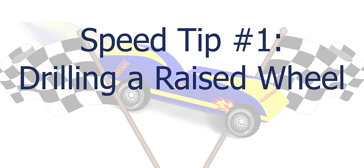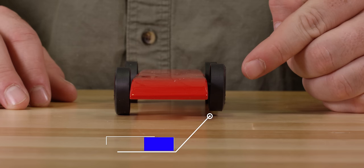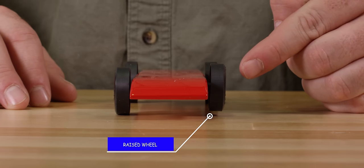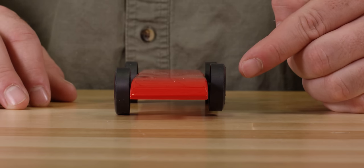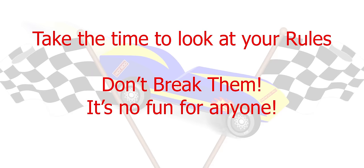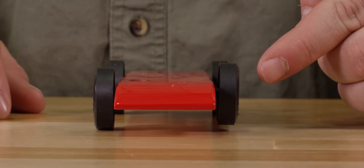Speed tip number one is drilling a raised wheel axle hole. The easiest way to make your car faster is to raise a front wheel. Don't worry, your car will still roll perfectly straight on only three wheels. Note that before raising a wheel, you must read your race rules to see if it is allowed. If your rules state all wheels must touch the track, then you cannot raise a wheel. If it does not say that, then your car will be faster by raising a front wheel.